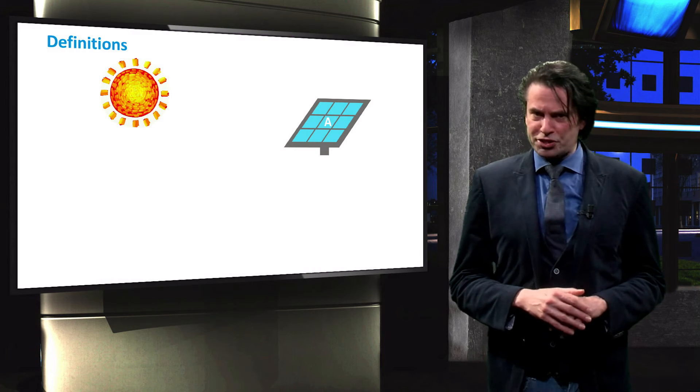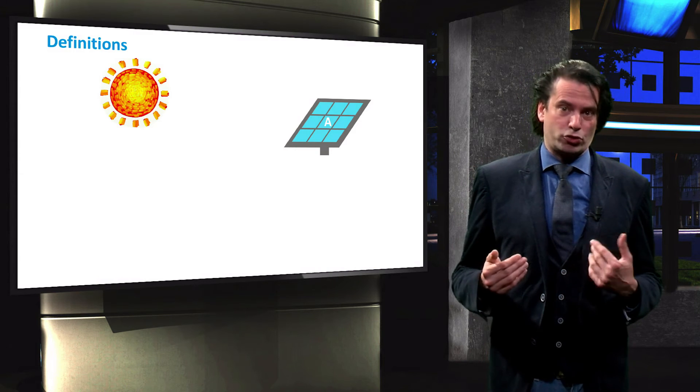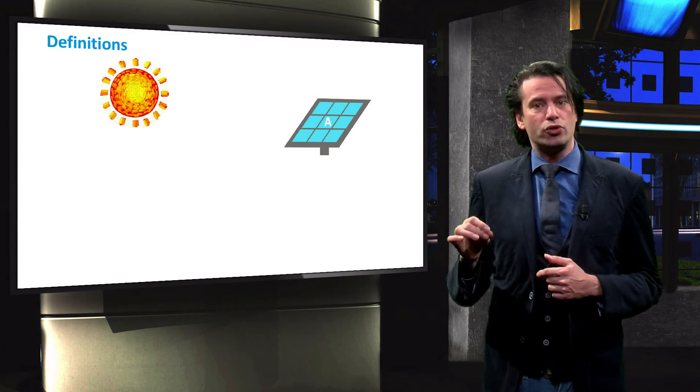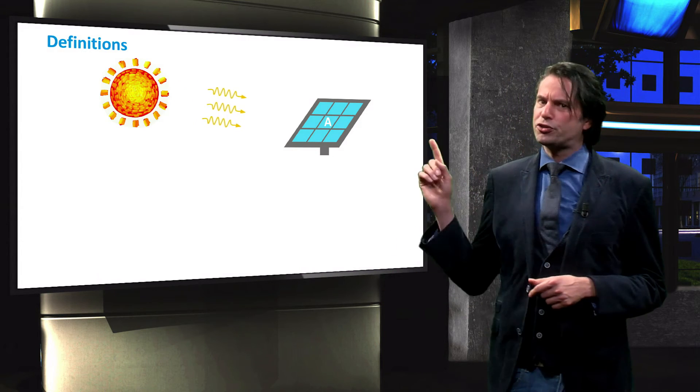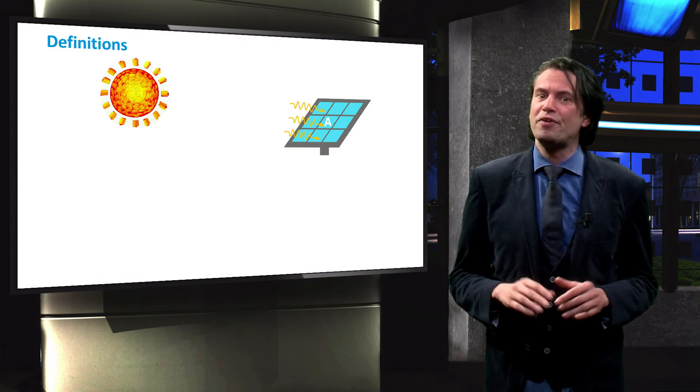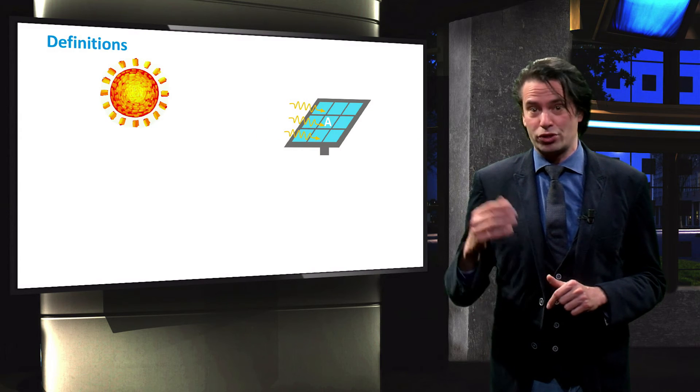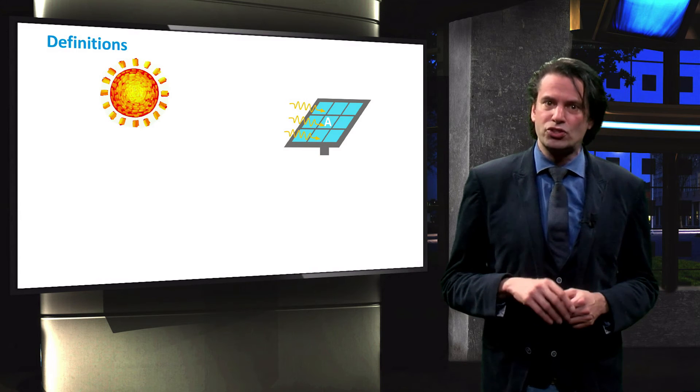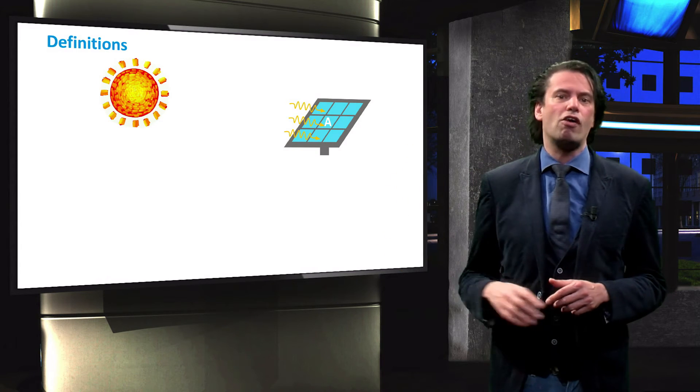The power output of a solar cell depends, apart from its conversion efficiency, on the amount of energy incident on the surface of a cell. The illustration shows a radiant source, in this case our sun emitting light. Some of that light is incident on the surface A of a solar module.